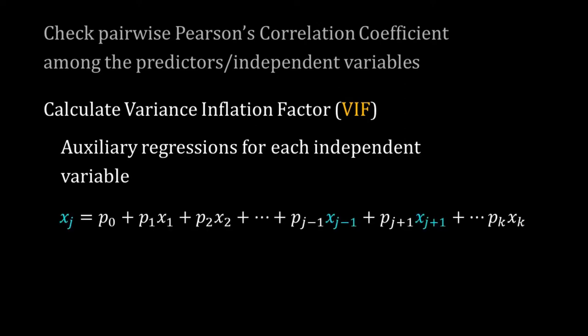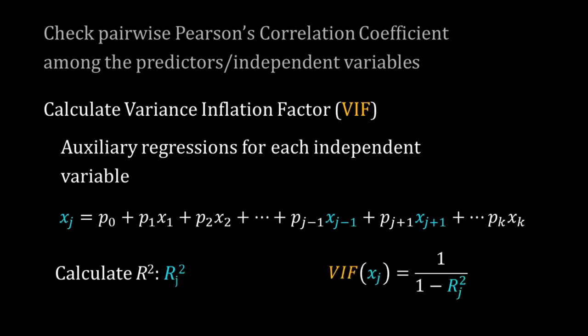To get the VIF for the j-th variable xj, regress xj against all other independent variables, then calculate R-squared for this regression — call it Rj². The VIF for xj is: VIF = 1 / (1 − Rj²). It can be shown that VIF is directly proportional to the variance of the estimated coefficient for xj, so if VIF is high, variance will be high. The rule of thumb is that we should be concerned about multicollinearity if VIF is greater than 10.